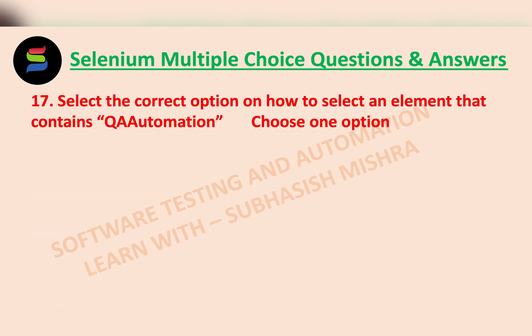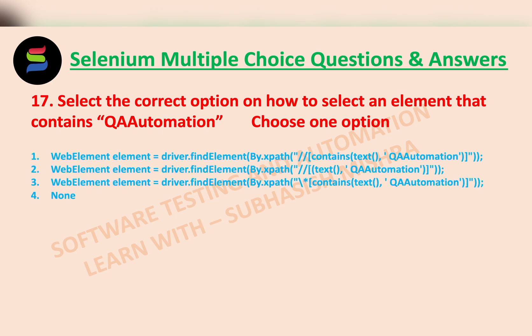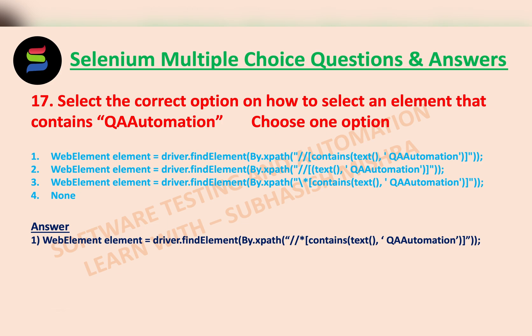Select the correct option on how to select an element that contains 'Queue Automation'. You have to choose one option — we have four different options. The correct answer is the first one: WebElement element = driver.findElement(By.xpath("//[contains(text(), 'Queue Automation')]")), using the contains() method with the text() function.